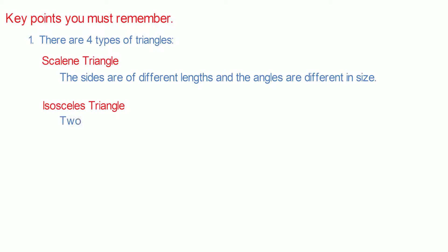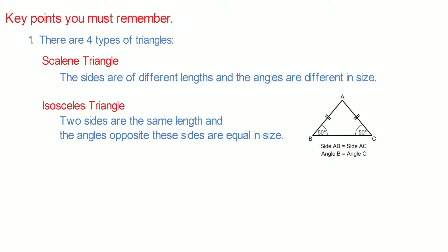Isosceles triangle. Two sides are the same length and the angles opposite these sides are equal in size. In triangle ABC, side AB equals side AC and angle B equals angle C.